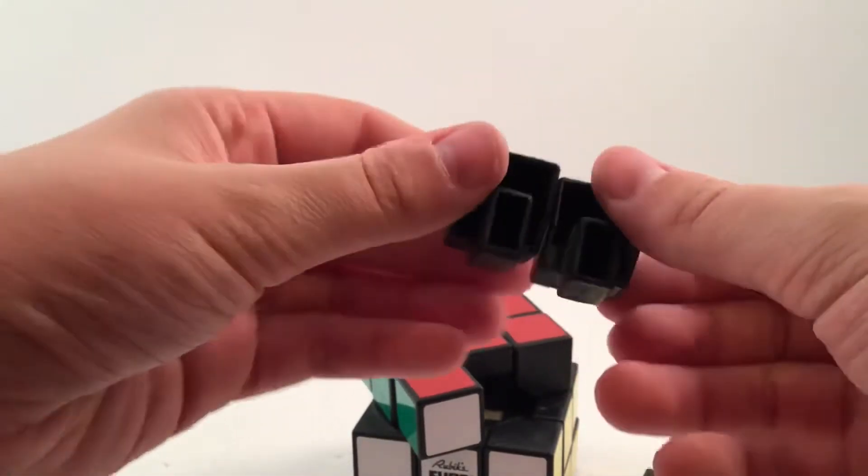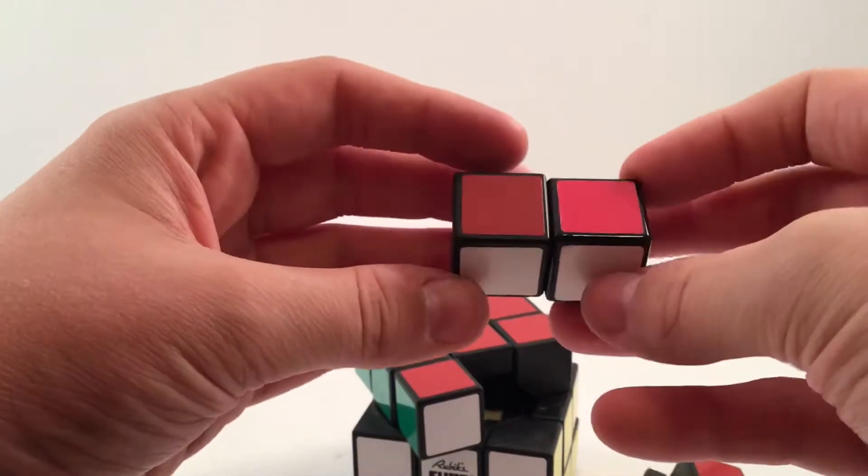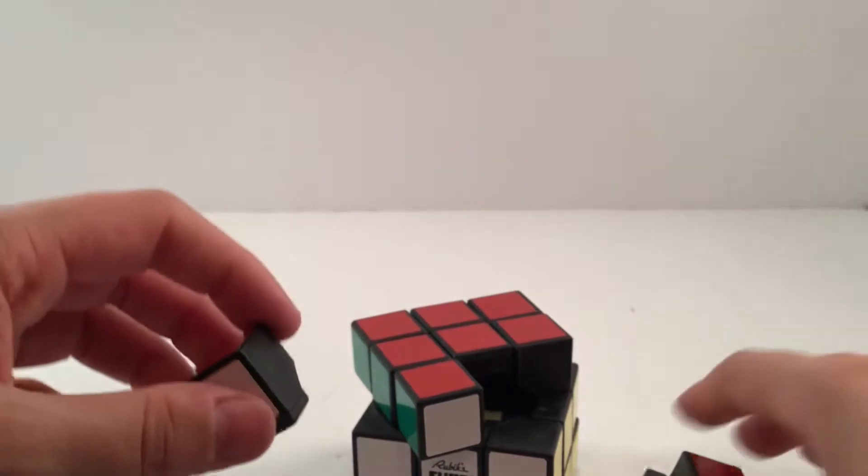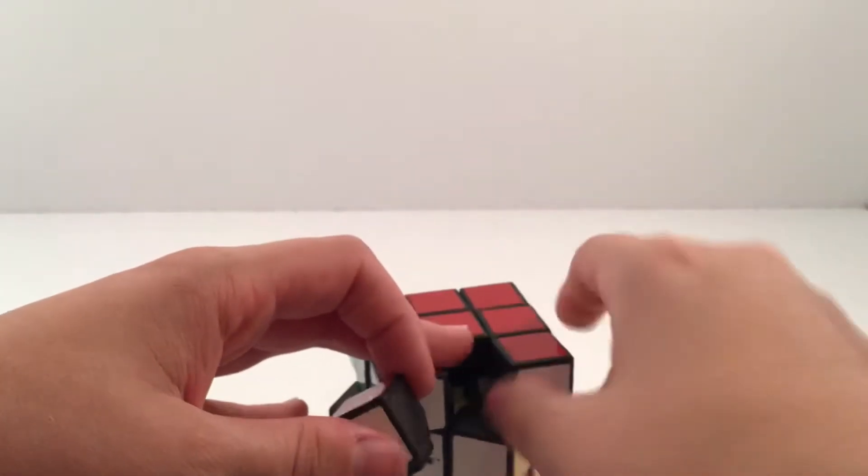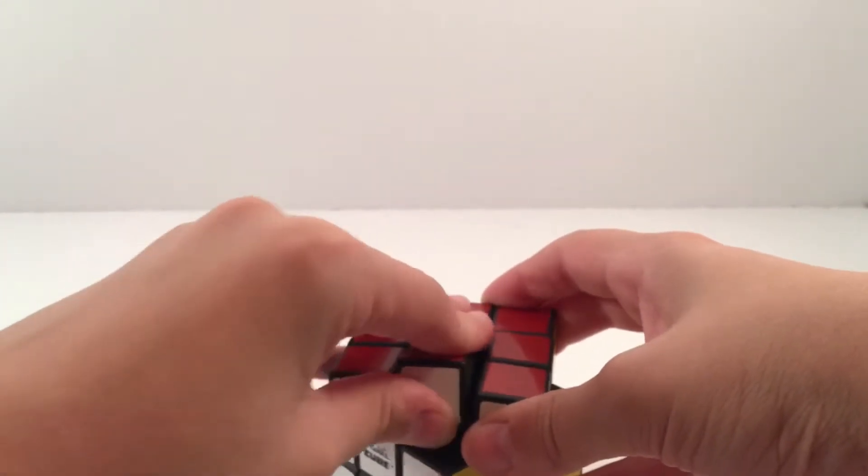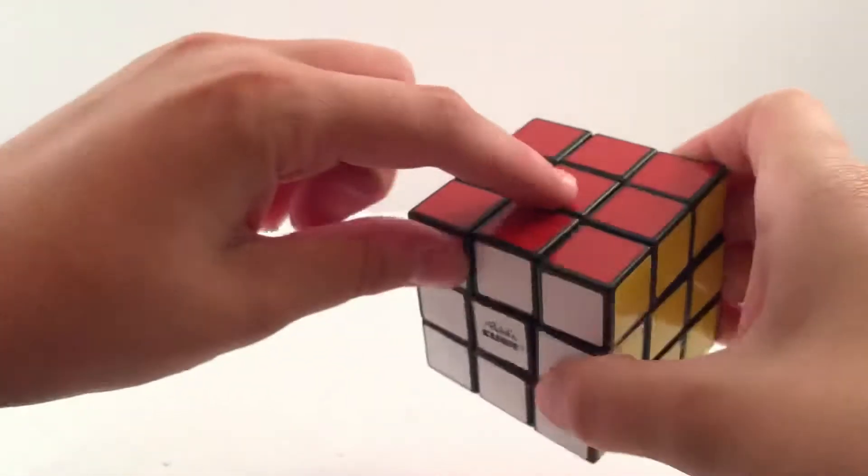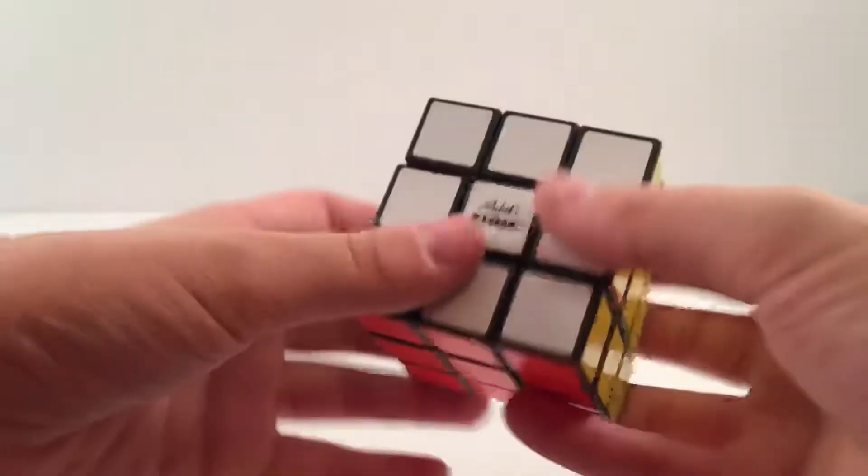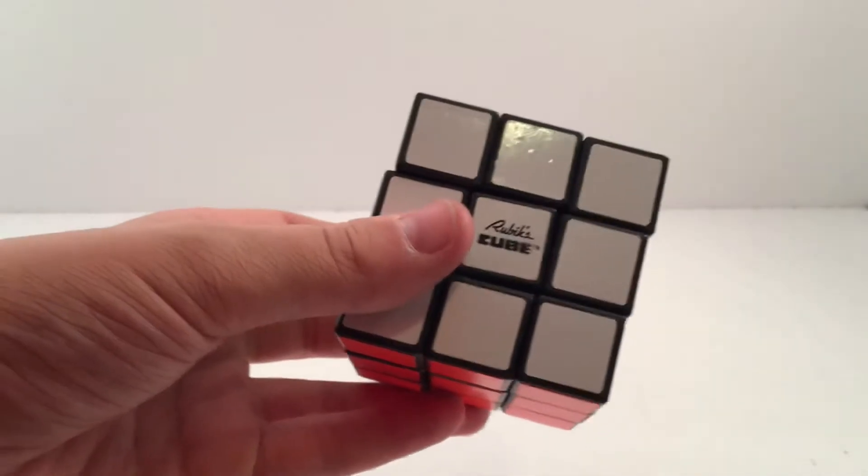And here are the edges, they have the same kind of mechanism, but the color scheme is different and the centers, like these parts, not just the caps, are also different.